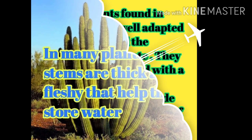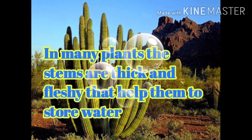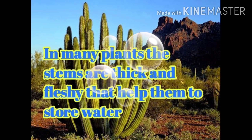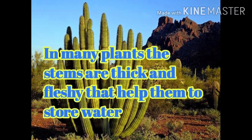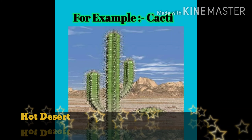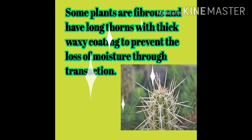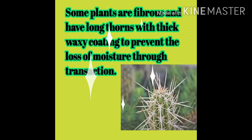In many plants the stems are thick and fleshy, which helps them to store water. Some plants are fibrous and have long thorns. Plants also have a thick waxy coating to prevent the loss of moisture through transpiration — transpiration is the process of water passing from the surface of a plant.